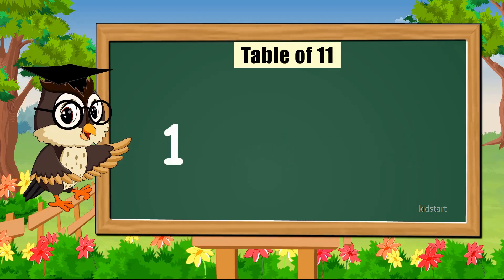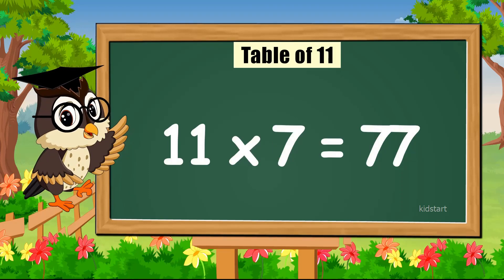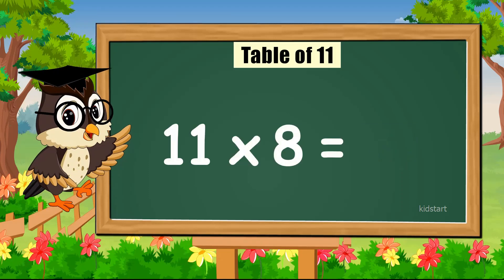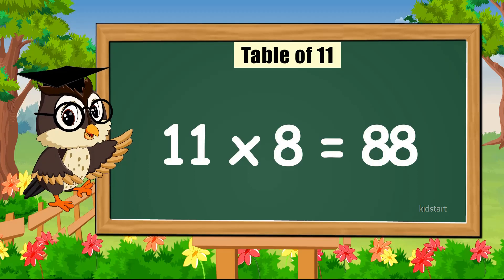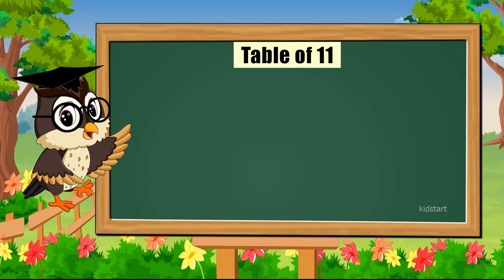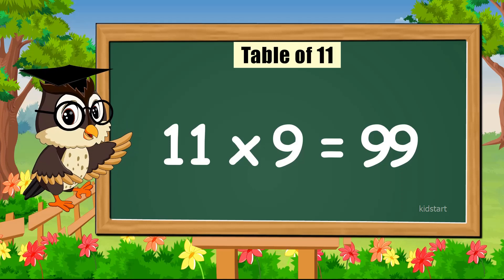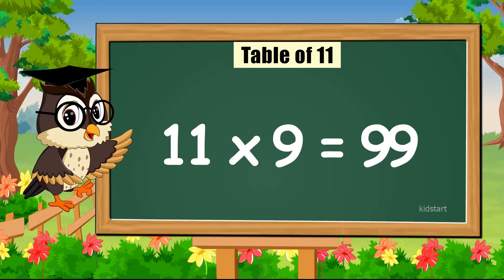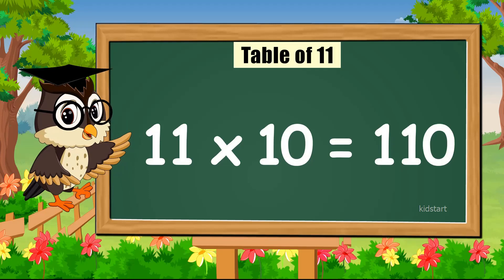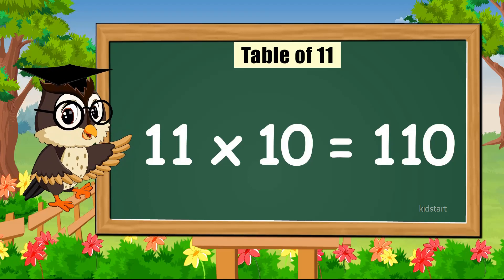Eleven times five is fifty-five. Eleven times six is sixty-six. Eleven times seven is seventy-seven. Eleven times eight is eighty-eight. Eleven times nine is ninety-nine. Eleven times ten is one hundred and ten.